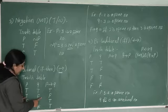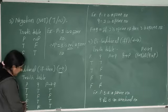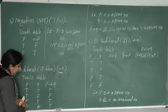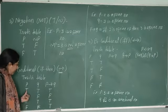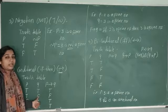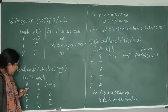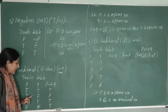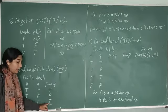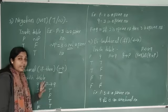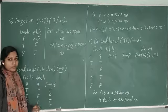For the conditional truth table: if both statements are true, the condition is true. If the first statement is true and the second is false, the condition is false. If the first statement is false and the second is true, the condition is true. And if both statements are false, the condition is also true. So the conditional is false only when the first statement is true and the second is false; all other cases are true.